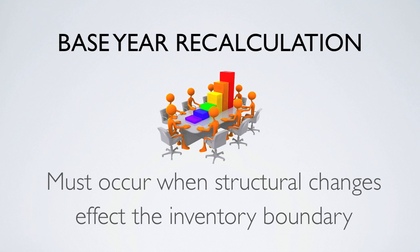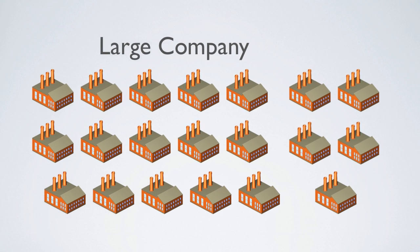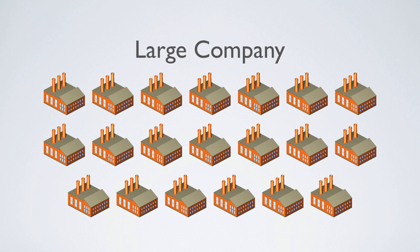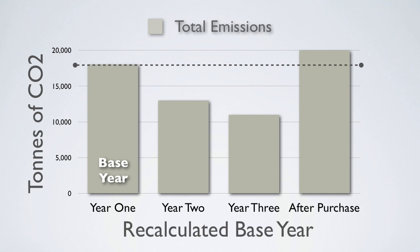In the previous example, the acquisition of the smaller power company by the larger one changed the company's inventory boundary, which merely transferred the emissions from one company to another. In this situation, the acquiring company should recalculate its base emissions to reflect what its emissions would have been in the base year if the five power plants had been included in its inventory.